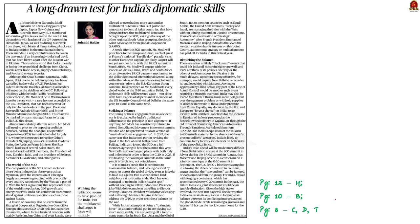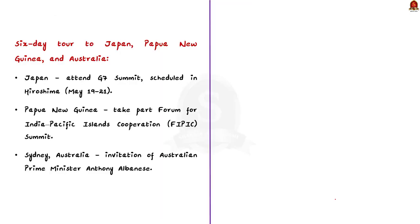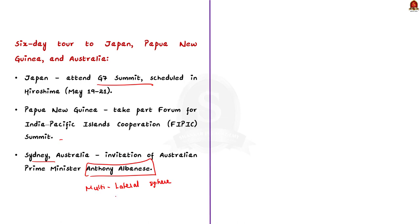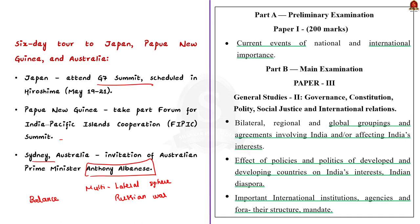Today, Prime Minister Narendra Modi is leaving for a 6-day tour to Japan, Papua New Guinea and Australia. He is traveling to Japan to attend the G7 summit in Hiroshima from May 19-21. After Japan, he will be in Papua New Guinea for the Forum for India-Pacific Islands Cooperation Summit, a vital forum to boost multilateral cooperation. He will then travel to Sydney at the invitation of Australian Prime Minister Anthony Albanese. These engagements are expected to strengthen India's position in the multilateral sphere.